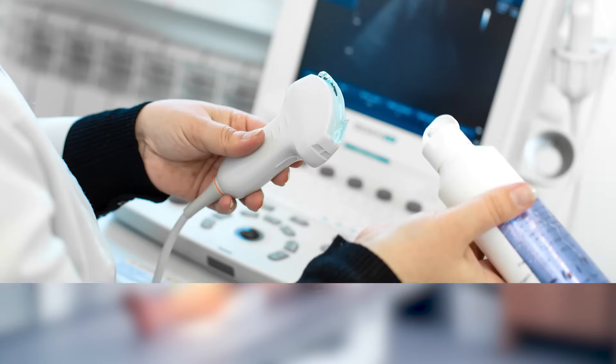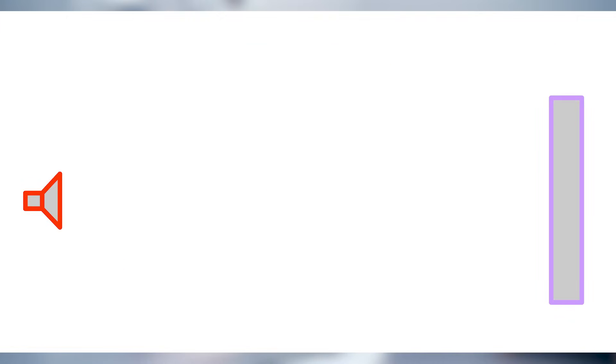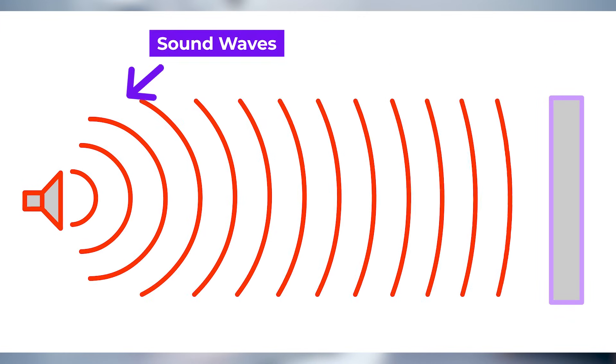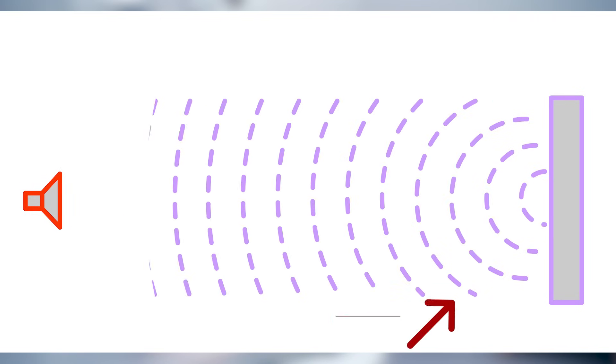Moving on to ultrasounds — a completely different imaging exam. Unlike X-rays, ultrasounds do not use radiation. Instead, they rely on sound waves — high-frequency sounds that your ears cannot detect or hear. The ultrasound probe sends these sound waves into your body, which then bounce back or echo from tissues inside your body.